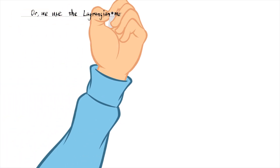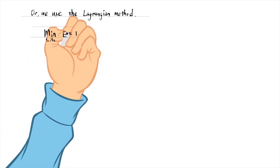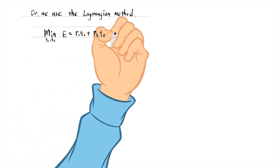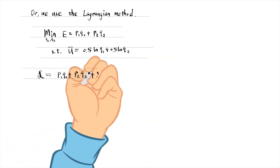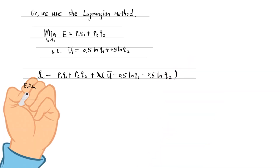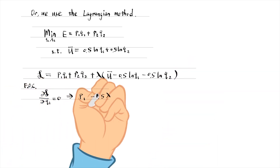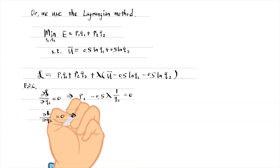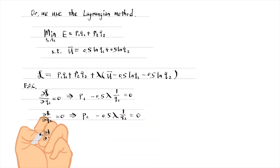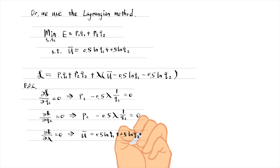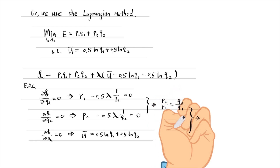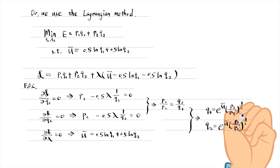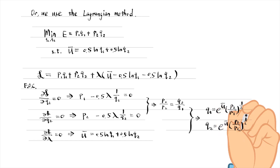Alternatively, we can use the Lagrangian method. We minimize the expenditures subject to a specific level of utility. Using the three first-order conditions, we solve for the quantities of demand in terms of prices and utility. These are the compensated demand functions because the utility is held constant.